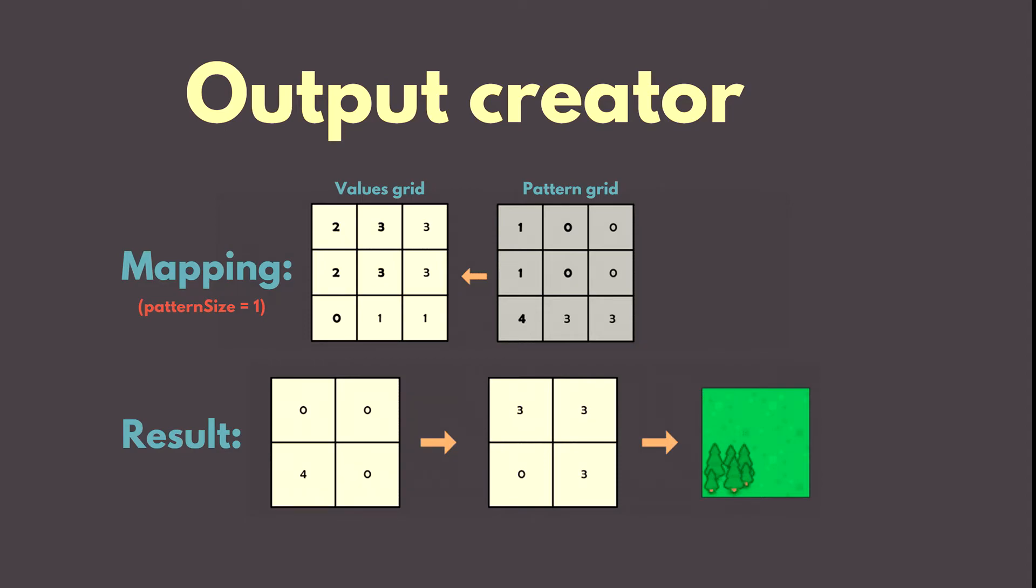In the slide you can see that the pattern grid is mapped back to the values grid and the result is then transformed into a tilemap.